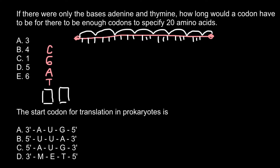Now let's take a look at what would happen if we had a codon made of 2 nucleotides, or a dinucleotide. We would have cytosine, guanine, adenine, and thymine. Now we have a combination of 4 variants in the first place of the codon, and 4 variants that can take the second position. So the total number of combinations would be 4 multiplied by 4, which is 16. So 16 is not enough, since we have 20 amino acids, and we also need to reserve some combinations for stop codons.